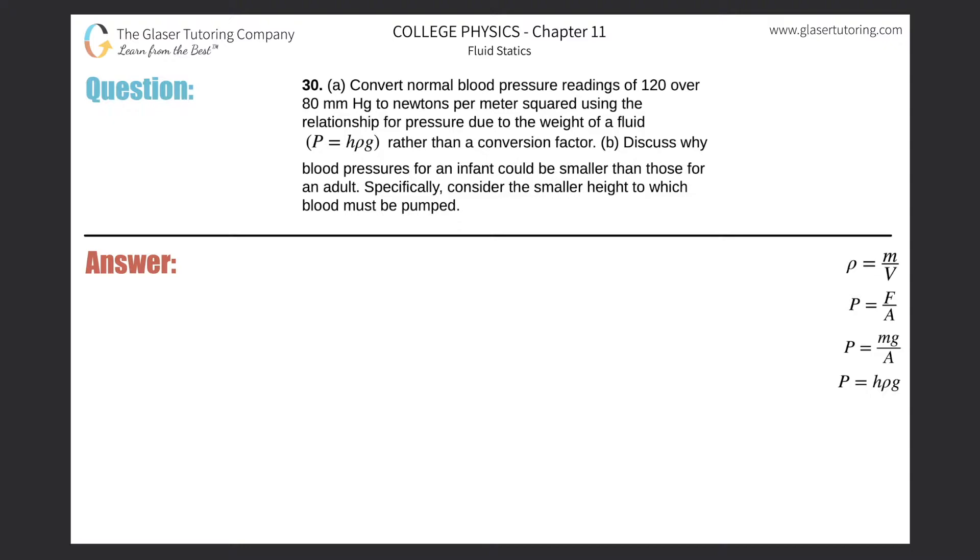Number 30, letter A. Convert normal blood pressure readings of 120 over 80 millimeters of mercury to newtons per meter squared using the relationship for pressure due to the weight of a fluid, rather than a conversion factor.